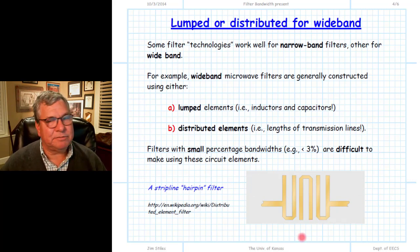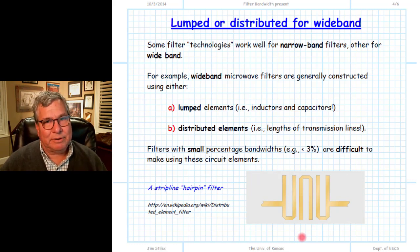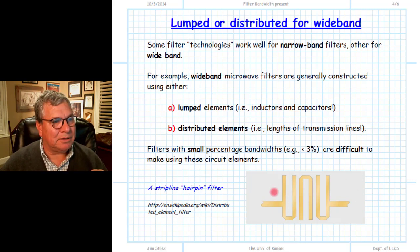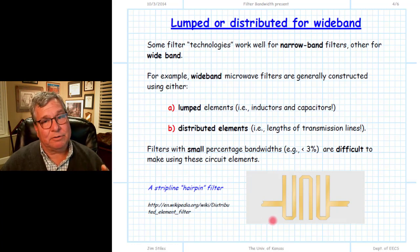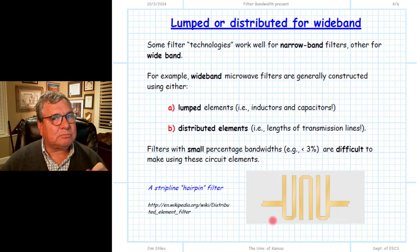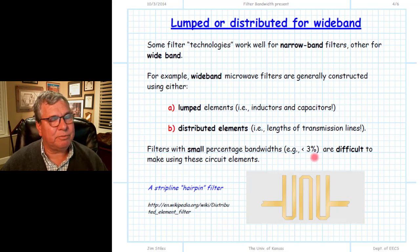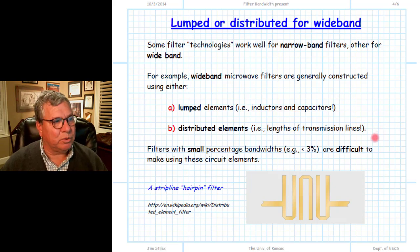This is actually a bandpass filter, and it shows that making bandpass filters requires considerable expertise — it's not apparent what the equivalent circuit model would be. But this is the kind of technology we would use for a higher-frequency filter in terms of its center frequency where the percentage bandwidth is still relatively large. If we start to get percentage bandwidths less than 3%, neither of these technologies will work particularly well.